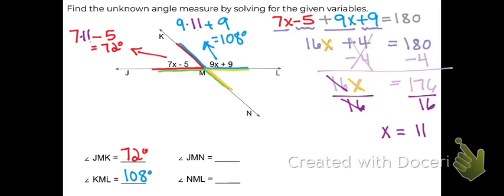Now, before we move on any further, we want to check our work. Remember, these two angles are supposed to add up to 180 degrees. Do they? 72 plus 108 is 180. So we're good.